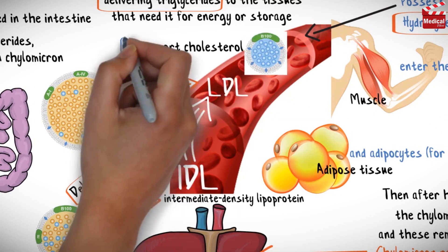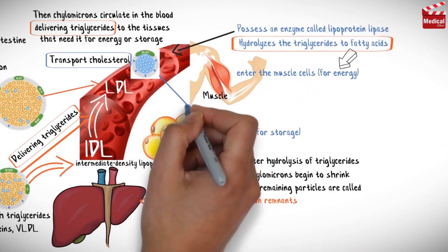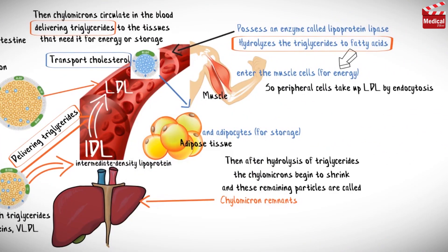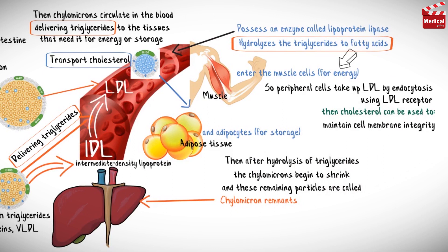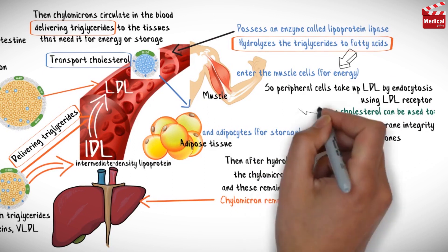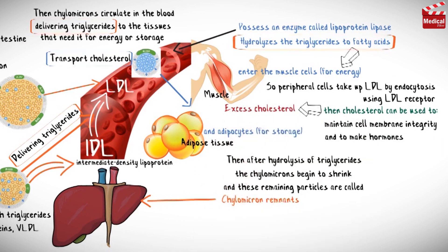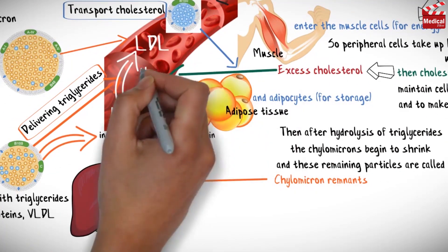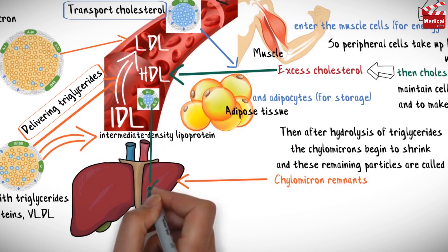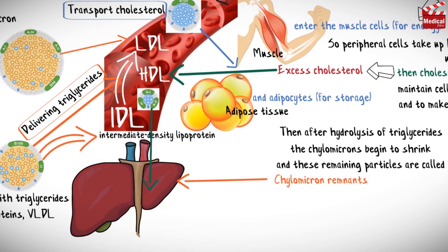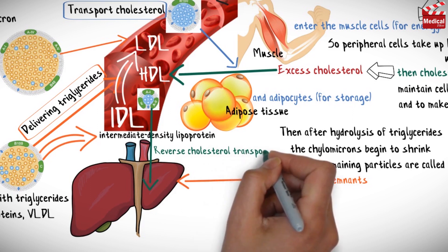LDL's main function is to transport cholesterol to body tissues. Peripheral cells take up LDL by endocytosis using the LDL receptor. Then cholesterol can be used to maintain cell membrane integrity and to make hormones. Then excess cholesterol is exported from the cells and delivered to high-density lipoprotein, HDL, to be returned to the liver in a process called reverse cholesterol transport.